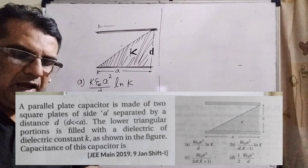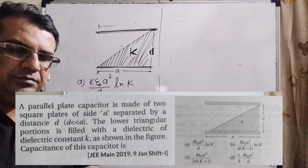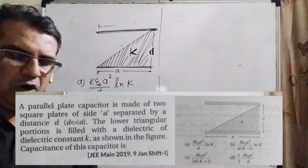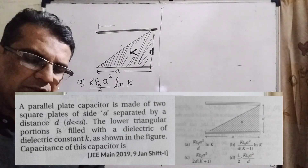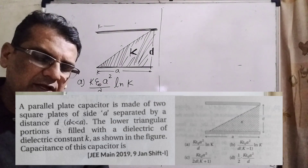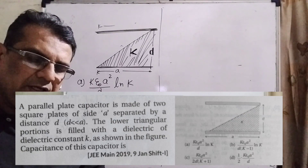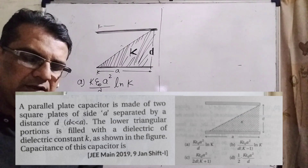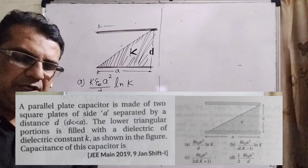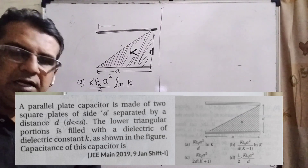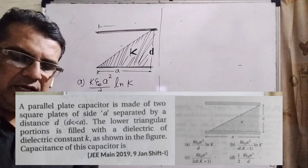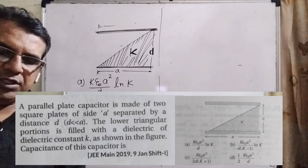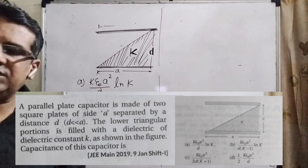Option A: K·ε₀·A²·ln(K) / d, where ln means natural log. Option B: K·ε₀·A² / d. Option C: K·ε₀·A² / (2d) · (K+1). Option D: (1/2)·K·ε₀·A² / d. This question was asked in JEE Mains 2019.